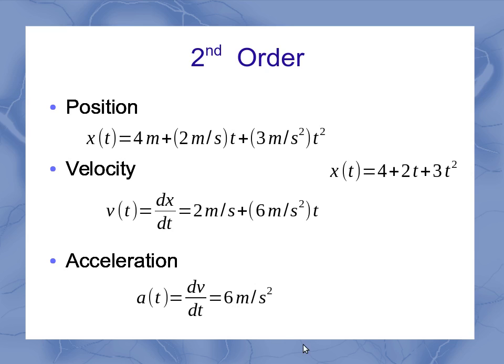But in this case, I've got 2 meters per second plus 6 meters per second squared times t. In this case, I've just got 6 meters per second squared. Again, I can take these three equations and plot them.